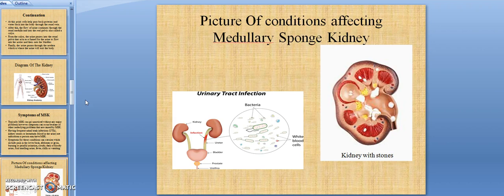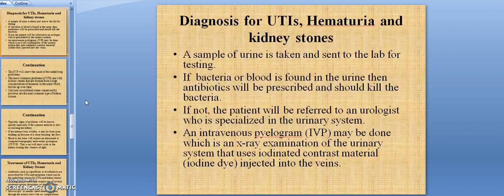As you can see, I have pictures here of the conditions affecting the medullary sponge kidney. We have a picture with kidney stones, and then a picture of the bacteria that gets caught up in the ureter leading to the kidneys or leading to the bladder that can cause UTIs. Diagnosis of UTIs, hematuria, and kidney stones.